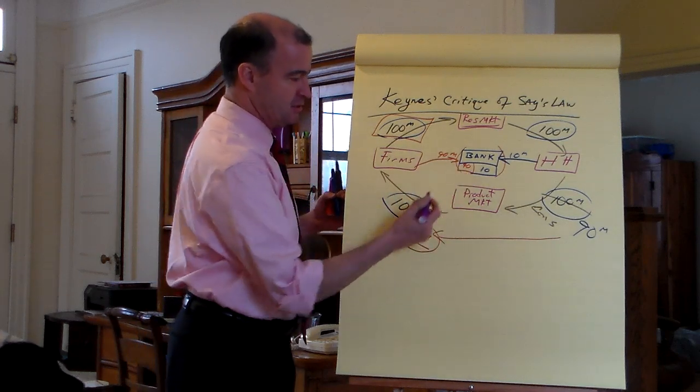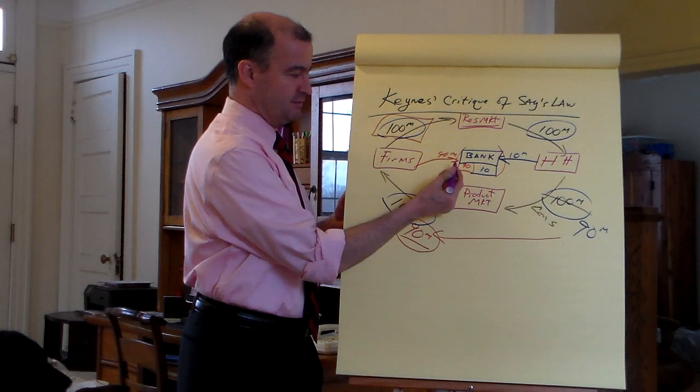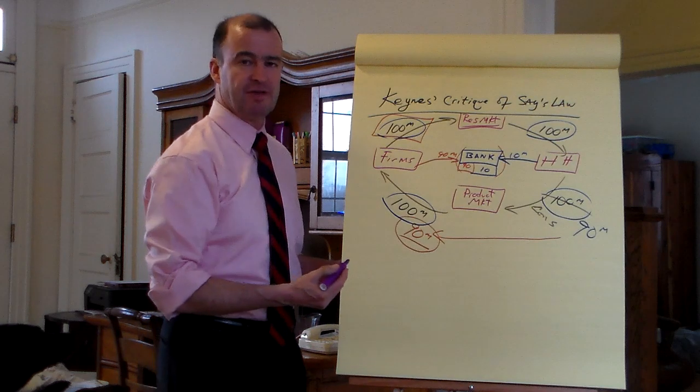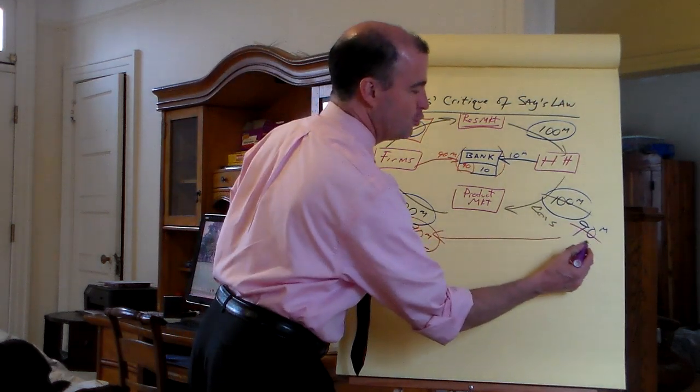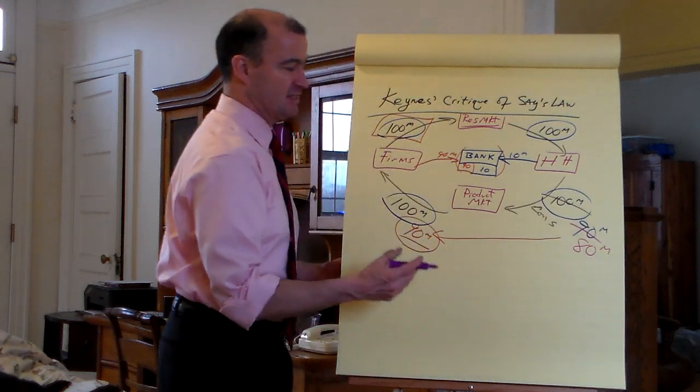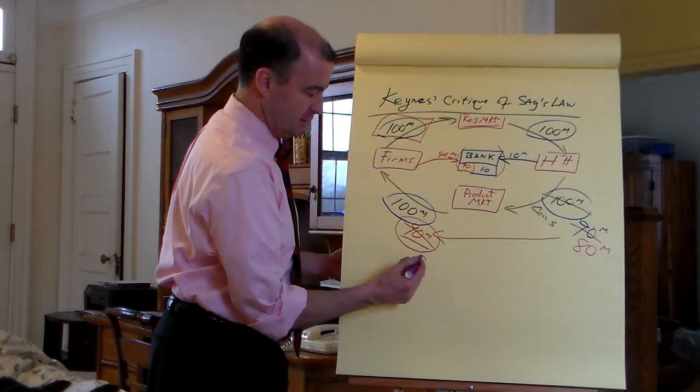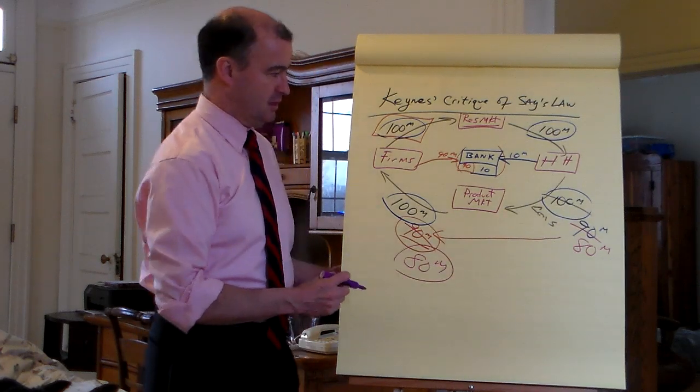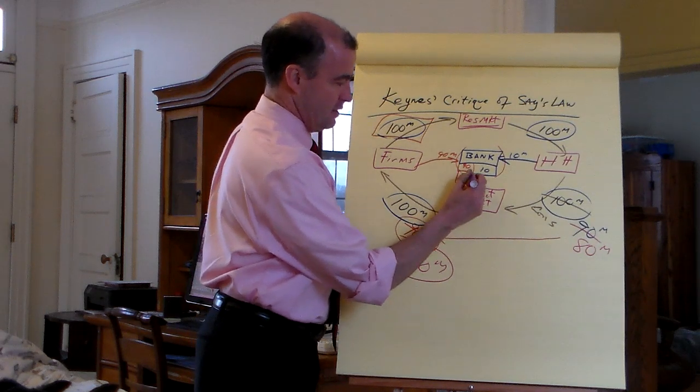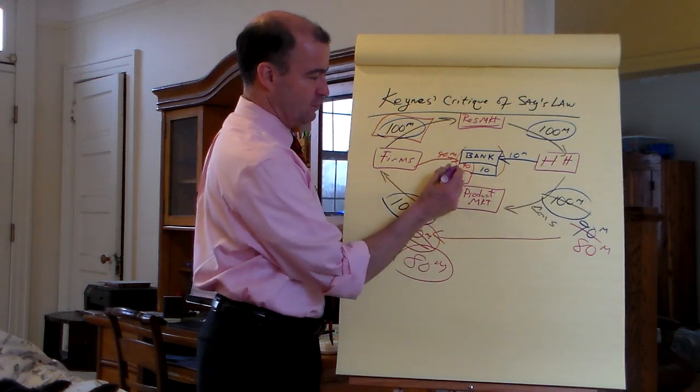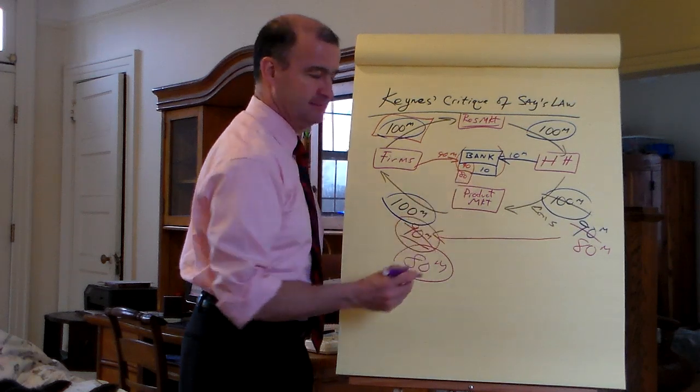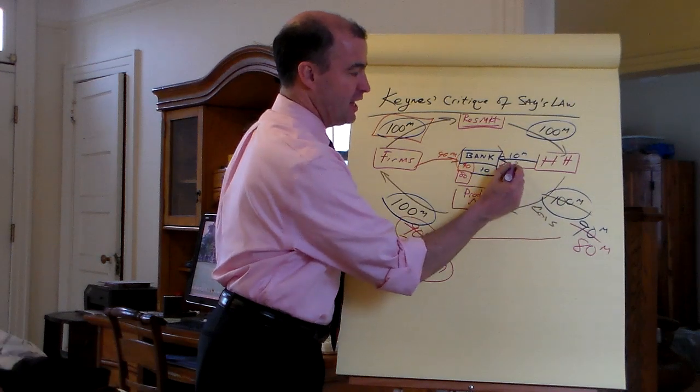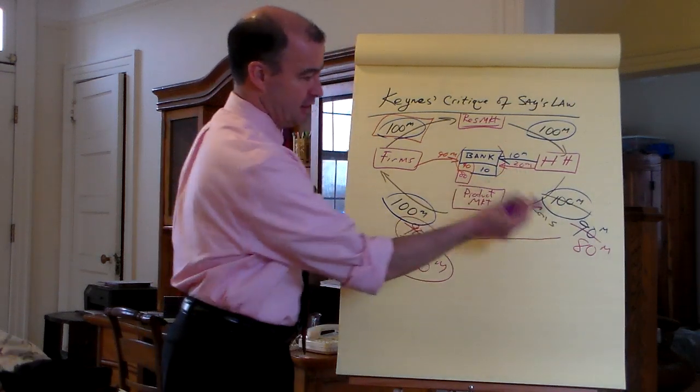Say we got $90 million spent winding up in the accounts of the firms and $10 million in the accounts of the households. What if they had saved more? Let's say they spent only $80 million, which means of course that $80 million is the revenue. And that amount that winds up in the bank accounts of the firms wouldn't be $90 million anymore, it would be $80 million. Households are saving more, this time $20 million.